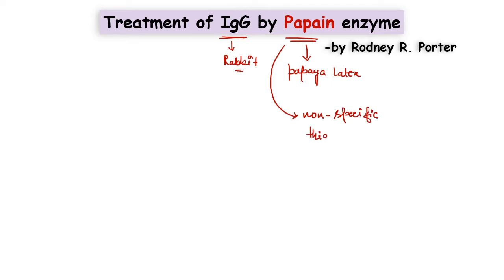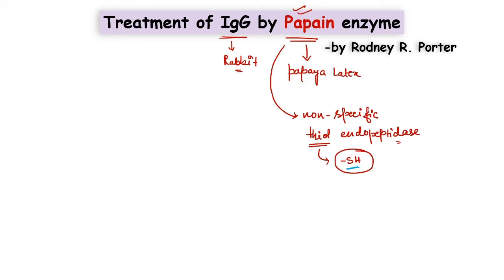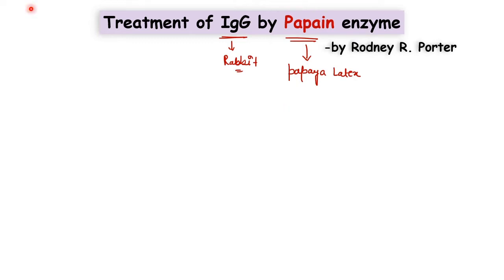Papain is a non-specific thiol endopeptidase. The term 'thiol' indicates the presence of a thiol group in the active site of this enzyme, which is very important for Papain's activity. So whenever we use Papain for any experiment, we use a reducing agent along with it to keep this thiol group in reduced form and maintain the enzyme's activity.